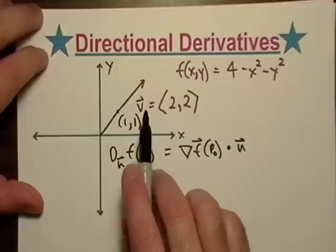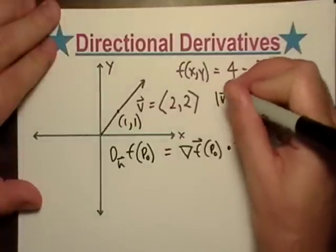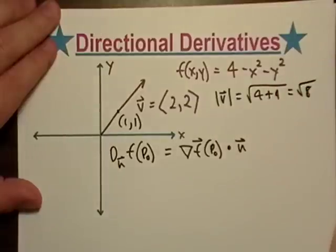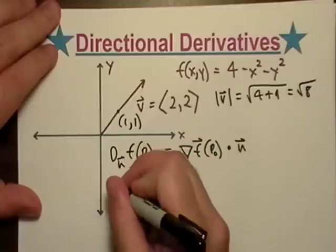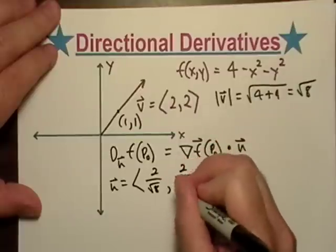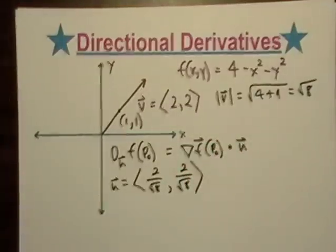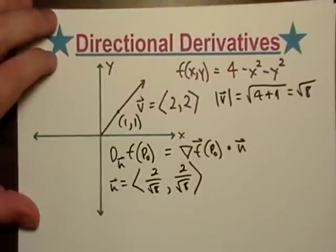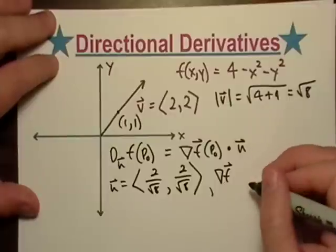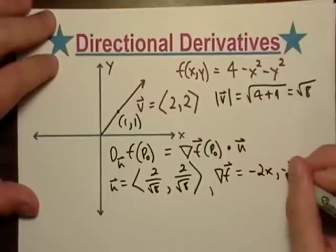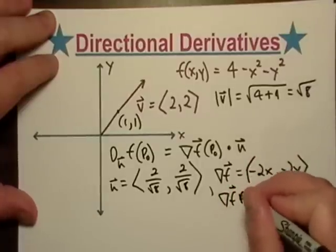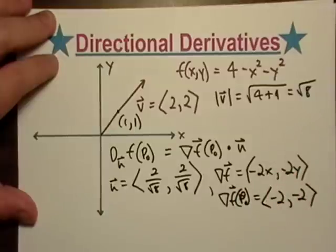The unit vector U is just V divided by its magnitude. The magnitude of V is the square root of 4 plus 4, which is the square root of 8. So U equals (2 over √8, 2 over √8). The gradient is pretty easy to compute, and at the point of interest it's (-2, -2).